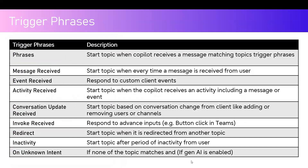The Phrases trigger starts a topic when the copilot receives a message matching the topic's trigger phrases. The Message Received trigger starts a topic every time a message is received from the user. Event Received responds to custom client events. Activity Received covers either a message or an event — if you receive either a message or an event, the Activity Received trigger can be executed.